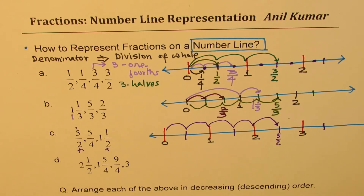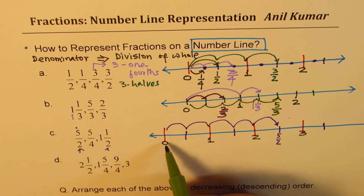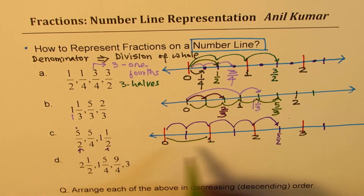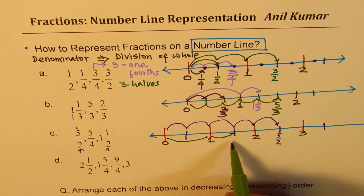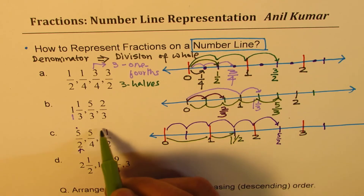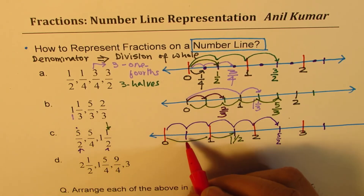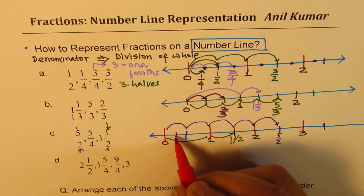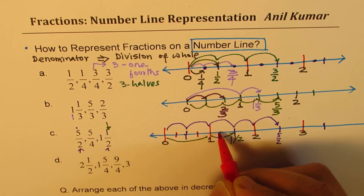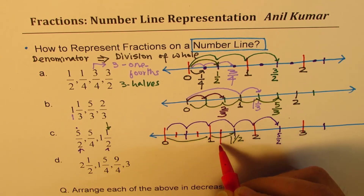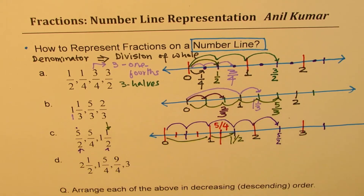Taking into halves, the next number is one and a half. That means you go one full and then half — so that is one and a half. Now let's look into the fourths. Fourths means I have to further divide half into halves. So that is one fourth, two fourths, three fourths, four fourths, five fourths — and this becomes five out of four.